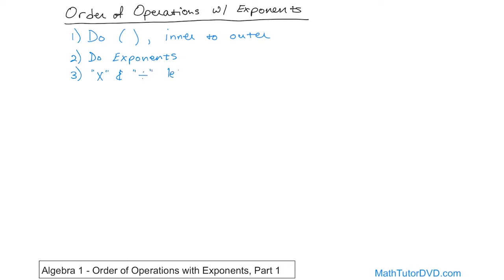We do multiplication and division left to right, just like you're reading a sentence. And the very last priority — the least important thing, you always do it last — is addition and subtraction, again left to right.